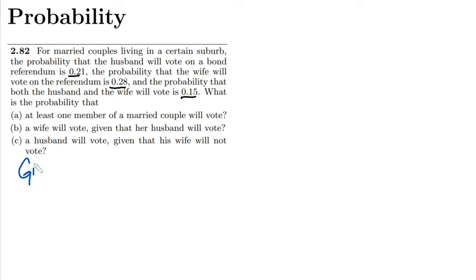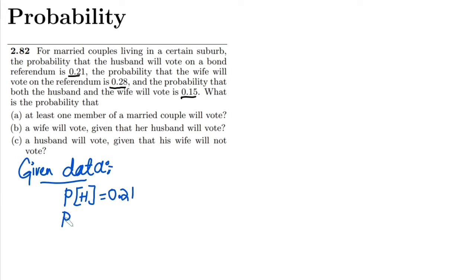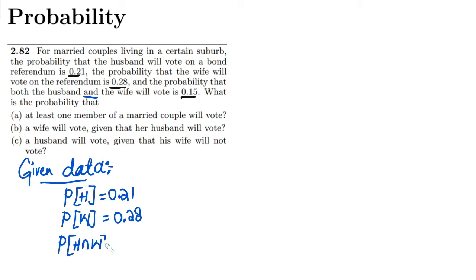Let me represent husband with H and wife with W. The probability that the husband will vote is 0.21. Similarly, the probability that the wife will vote is 0.28. The probability that both the husband and the wife will vote uses the intersection symbol, so P(H ∩ W) = 0.15.